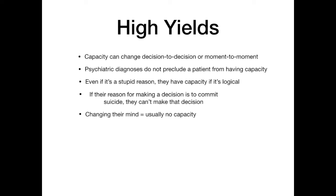Let's wrap up with some high-yield information. First: capacity can change decision to decision or moment to moment. Remember, it's the capacity to make a specific medical decision. One minute you can be assessing the patient's ability to leave the hospital AMA, then if they decide to stay and refuse their antibiotic, you reassess capacity for that specific refusal. It also changes moment to moment — patients can be delirious, septic, or have clinical conditions clouding their cognition. If you assess a patient and find they don't have capacity, you could reassess 30 minutes later for the same decision and find that they do. Failing capacity once does not mean you can't have it at another time.